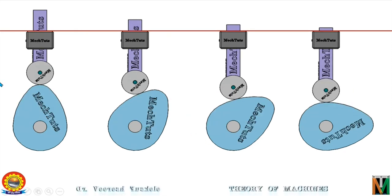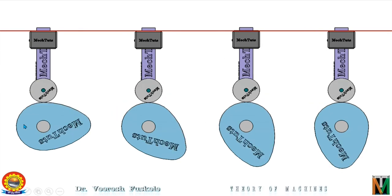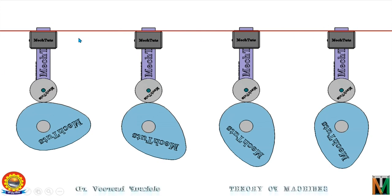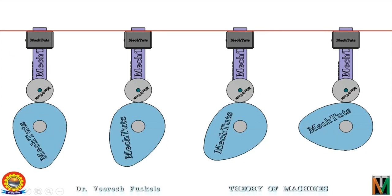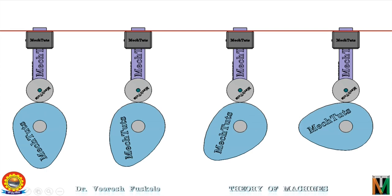This picture depicts the downward motion of the follower, or the fall of the follower, with the rotation of the cam depending on its profile. In this picture the follower is not moving with the rotation of the cam — this is known as dwell of the follower. There is no displacement of the follower with the cam rotation. Similarly in this figure also the follower is not moving, so this is also the dwell of the follower.